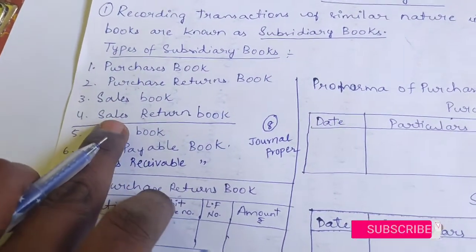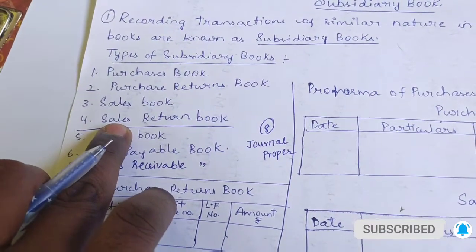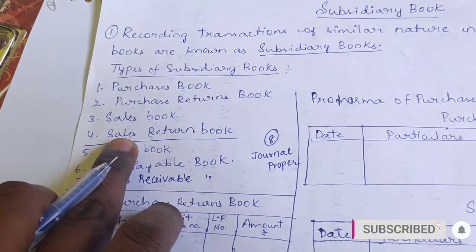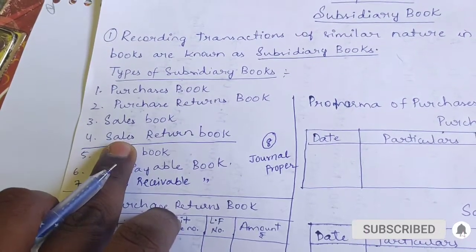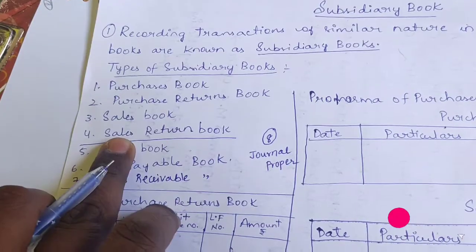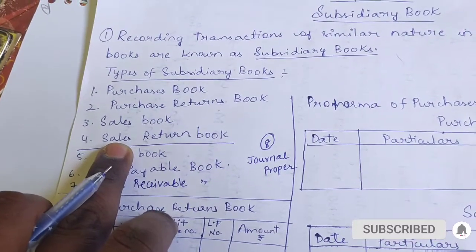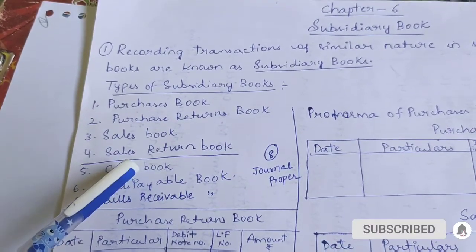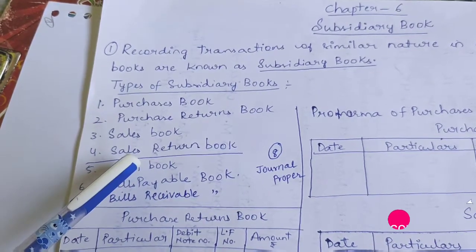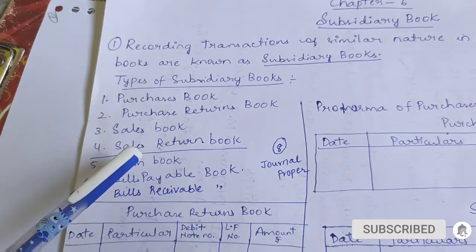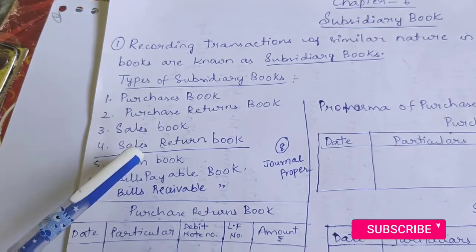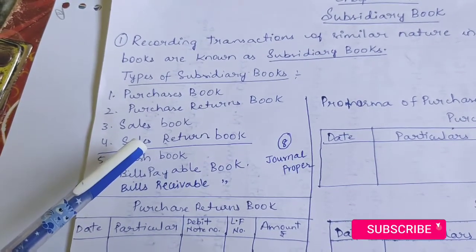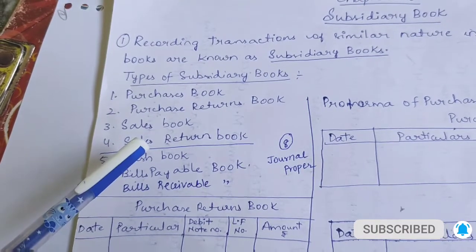First is purchases book. In the purchases book, we record only purchase transactions that are on a credit basis. Credit means we will pay cash later — not at the same time. For example, Rajesh has purchased a pen but he doesn't have cash right now; after a few months he will come and give the cash. So that is a credit transaction.